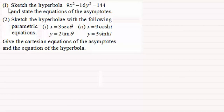Okay, well in the first question we've got to sketch the hyperbola 9x² - 16y² = 144 and state the equations of the asymptotes. So what was that summary then of the previous video?